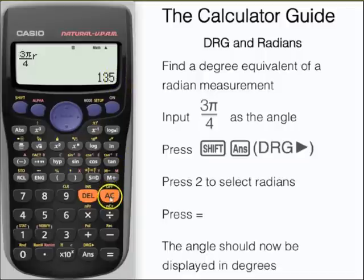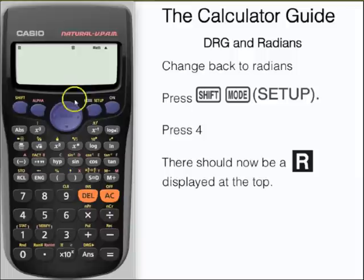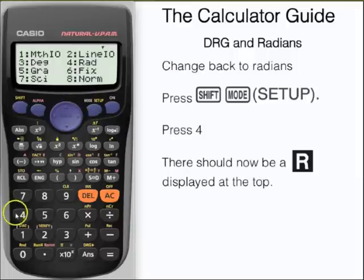We're going to do the same now, but this time changing from degrees to radians. We need our calculator in radian mode, so we need to press setup and 4 for radians.